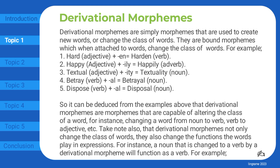For example: 'hard' (adjective) plus '-en' gives 'harden' (verb). 'Happy' (adjective) plus '-ly' gives 'happily' (adverb). 'Textual' (adjective) plus '-ity' gives 'textuality' (noun). 'Betray' (verb) plus '-al' gives 'betrayal' (noun). 'Dispose' (verb) plus '-al' gives 'disposal' (noun).